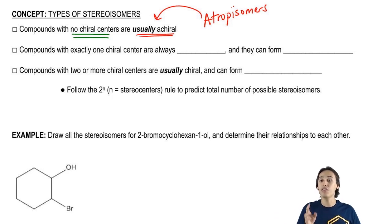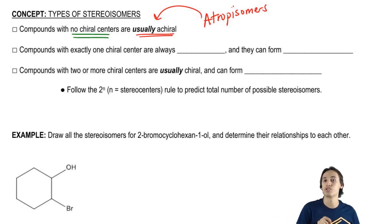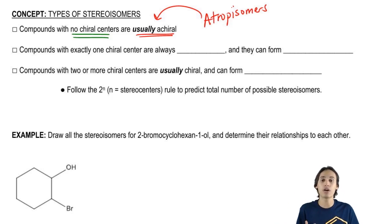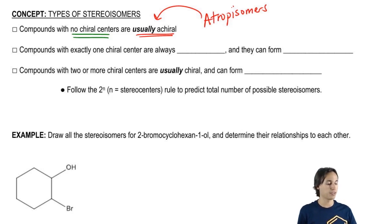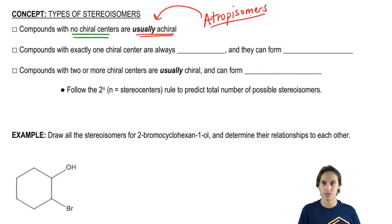Atropisomers happen to break the rules and are chiral for other reasons. But other than that, most molecules can be really well predicted by the number of chiral centers they have. If they have no chiral centers, they're not chiral — except for the case of atropisomers, which are exceptions that I'll teach you about.